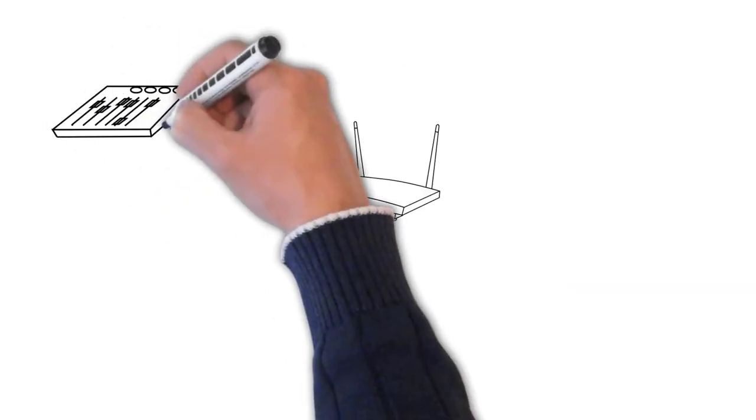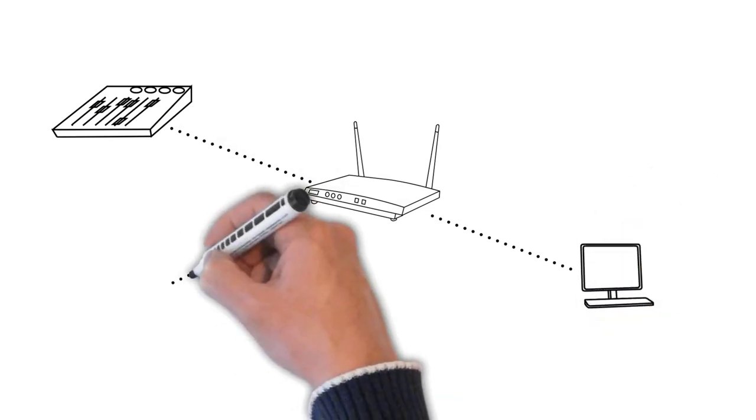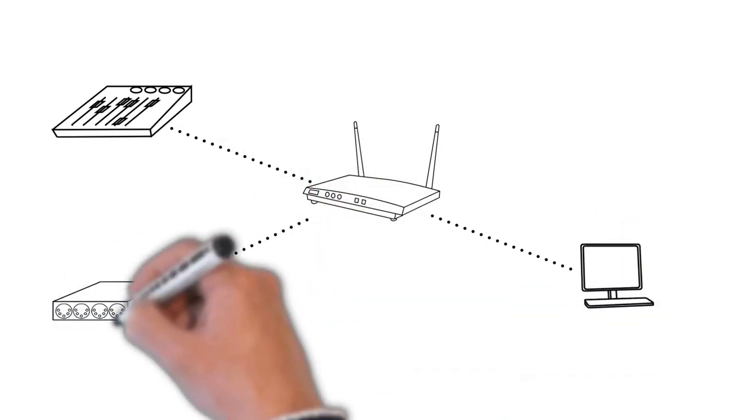One last term I want to mention is star topology — it's how we hook up networks. With DMX, we come out of the lighting console, go into the first fixture, out to the second, out to the third, and so on. With networking, it's completely different. Our router or switch is often the center of the network, and then all of our devices are spokes out from that — like a star.